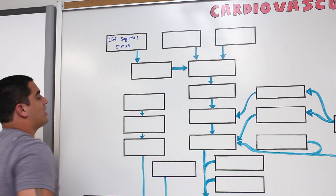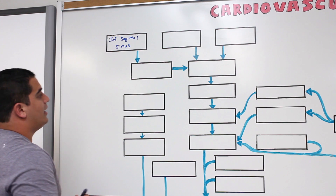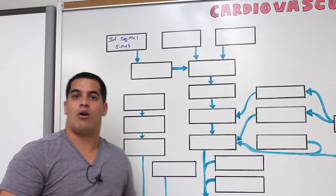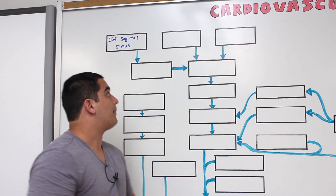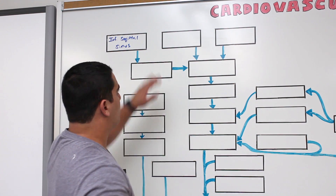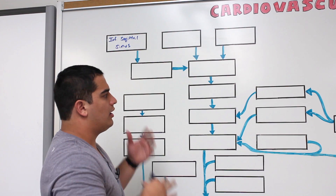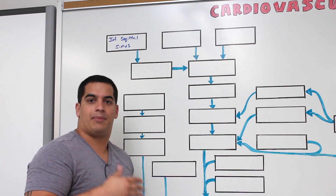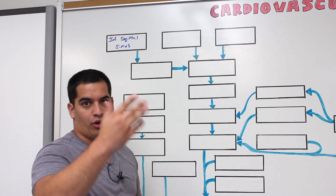The inferior sagittal sinus is located within the lower part of the falx cerebri. We'll discuss these meningeal layers and dural septa more in the neurology section.